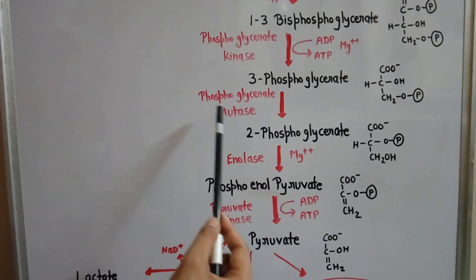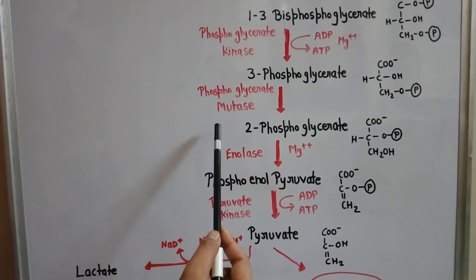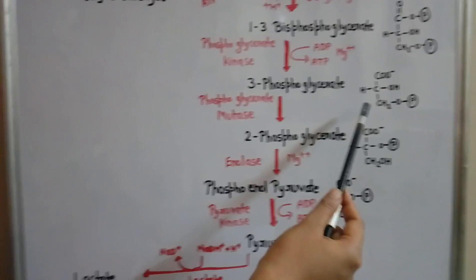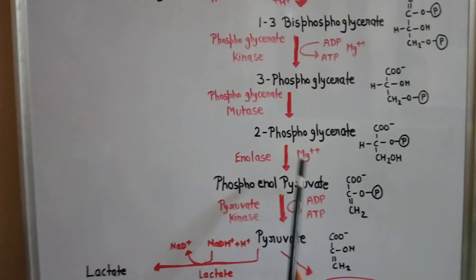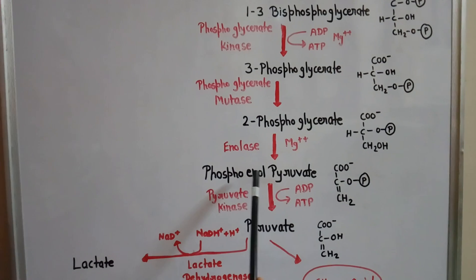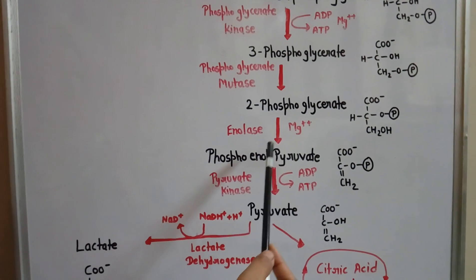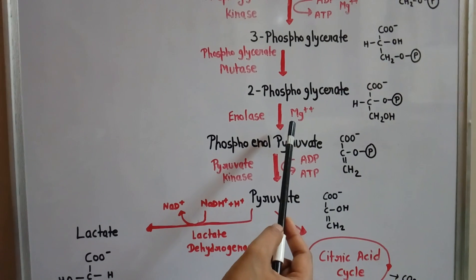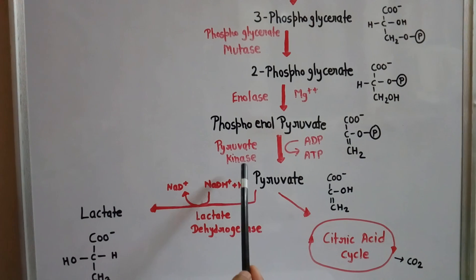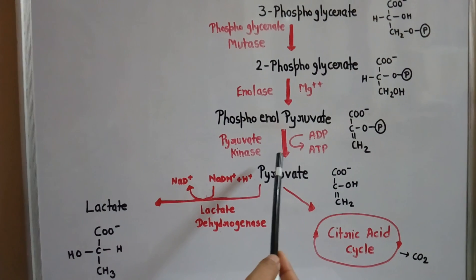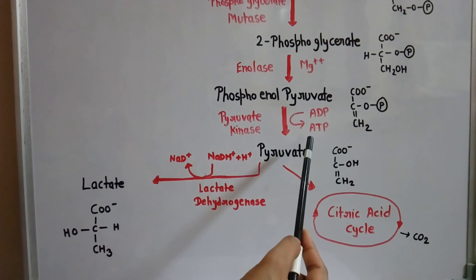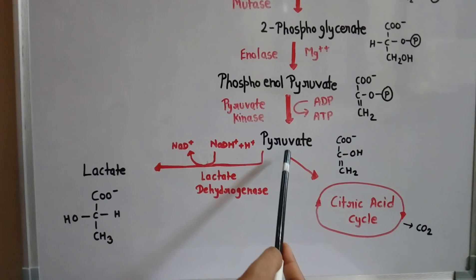3-phosphoglycerate is converted to 2-phosphoglycerate in the presence of the enzyme phosphoglycerate mutase, where the phosphate group is transferred from the third position to the second position. Then 2-phosphoglycerate is converted to phosphoenolpyruvate in the presence of the enzyme enolase, catalyzed by magnesium ions. Phosphoenolpyruvate is then converted to pyruvate in the presence of the enzyme pyruvate kinase, where two ADP molecules are converted to two ATP molecules.